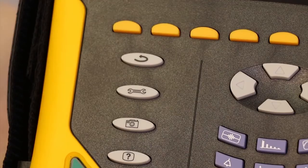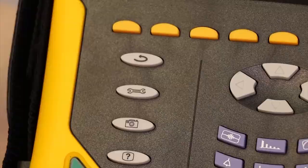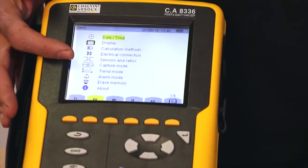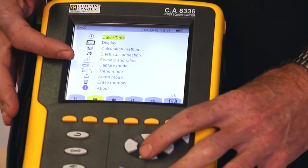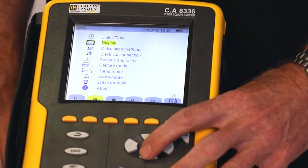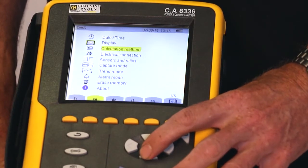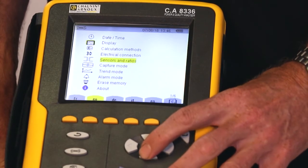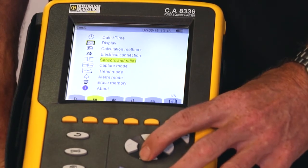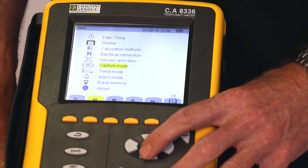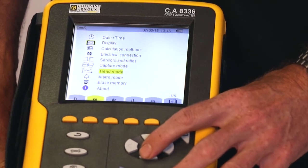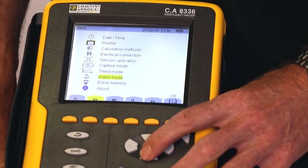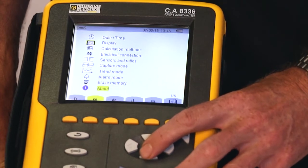The first thing we're going to do is to show you the set-up menu by pressing the set-up key. This takes us to a display where we can see and change the date and time, the display contrast, calculation methods, the electrical connection, the current sensors and ratios we've connected, the capture mode, trend mode and alarm mode. We can also erase the memory and check the firmware version of the product.